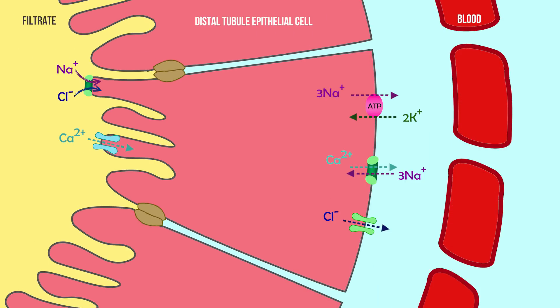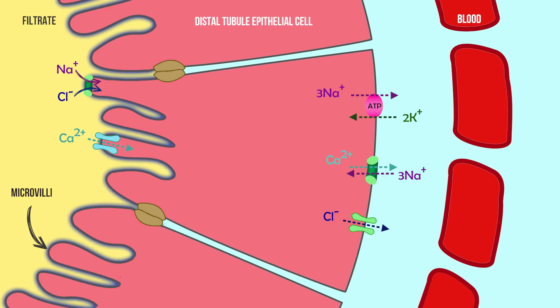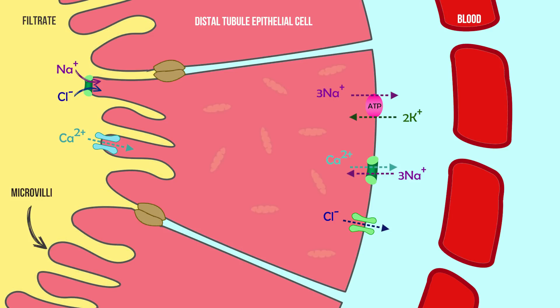The cells of the distal convoluted tubule have a similar structure to those of the proximal convoluted tubule, with microvilli lining the inner surface area for reabsorption and numerous mitochondria to supply energy needed for active transport.